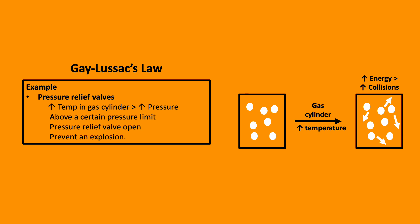Gay-Lussac's law clinical example: pressure relief valves. In warm environments, the temperature within a cylinder can increase and this will result in an increase in pressure. In order to limit the pressure within the cylinder, a pressure relief valve will open and allow venting of gas to prevent the explosion of the cylinder.